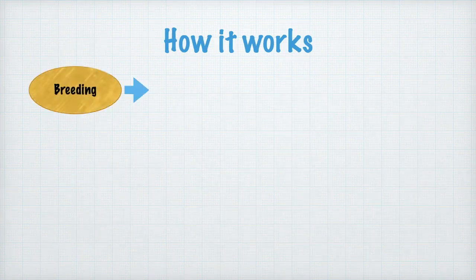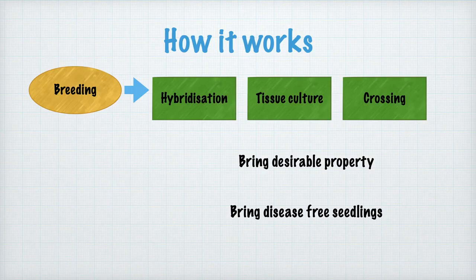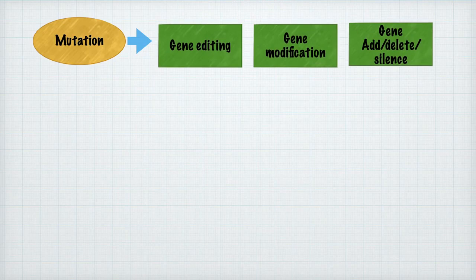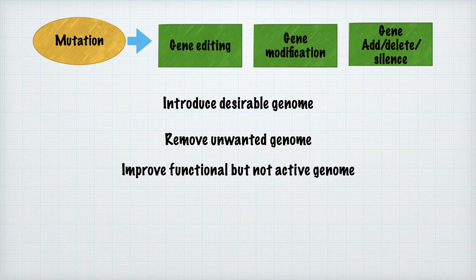To summarize how genetic engineering works in crop improvement: through breeding, hybridization, tissue culture, and crossing, it brings desirable traits to the plant, produces disease-free seedlings, and removes bad or undesirable traits. For mutation, gene editing, modification, deletion, or silencing introduces desirable genome by addition, removes unwanted genome by deletion, and improves functional but inactive genome by silencing. Examples of GMOs in agriculture include golden rice and Bt cotton.